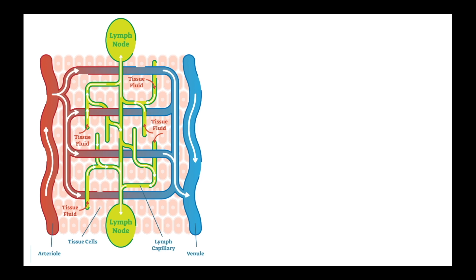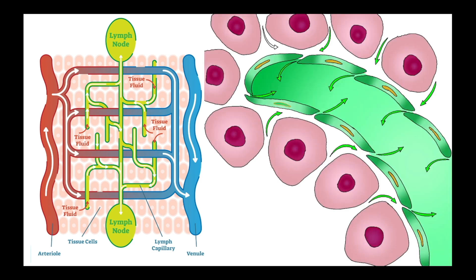So where does the lymph come from? Approximately 20 liters of fluid is forced out of the arterioles through the capillary beds every day to allow the exchange of gases and nutrients. The vast majority of that interstitial fluid is reabsorbed at the venous end of the capillary bed due to osmotic pressure. However, about three liters remains unabsorbed and becomes lymphatic fluid, or lymph. This unabsorbed fluid is almost immediately taken up by capillaries of the lymph system, which wind their way between the blood capillaries.